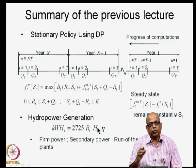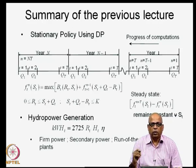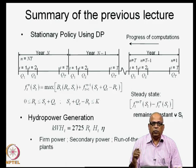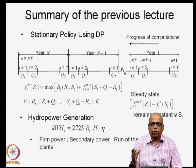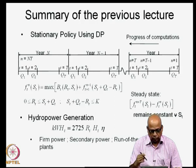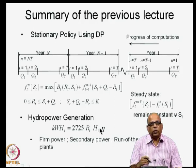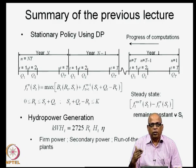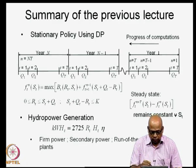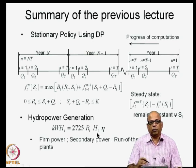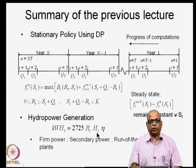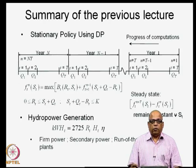The net head H_t available for power generation is after accounting for head losses in the penstocks and other losses. When we come to hydropower generation at reservoir sites, we also account for the tailwater level in reckoning H_t.